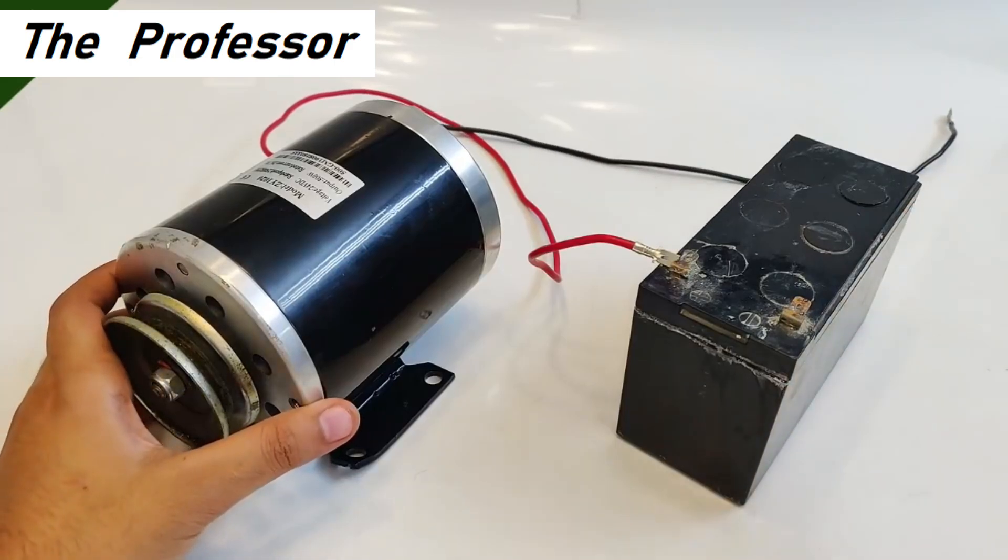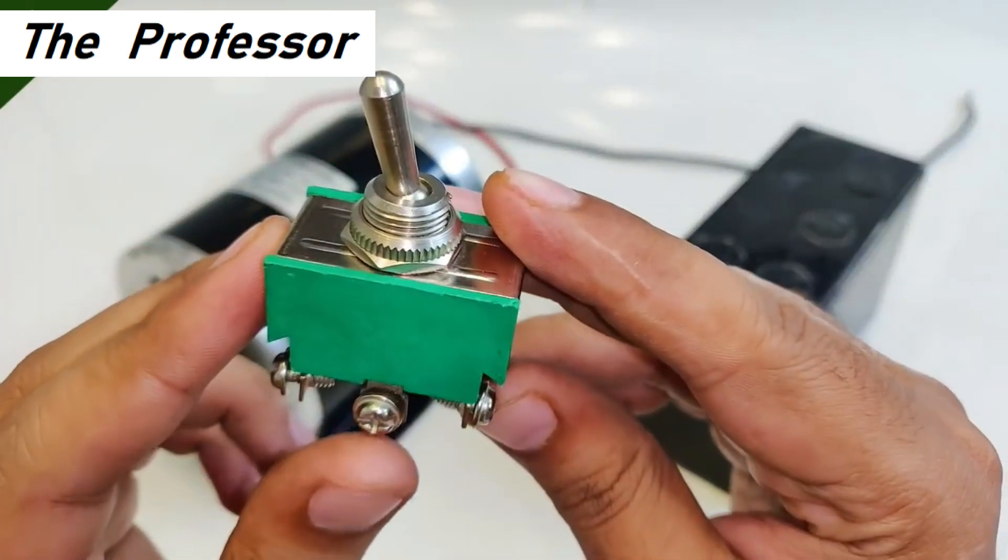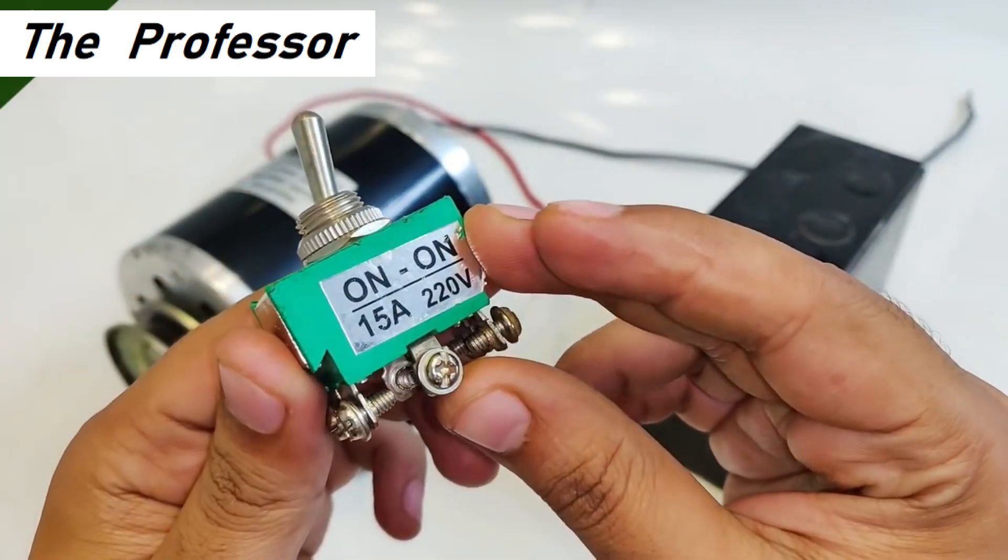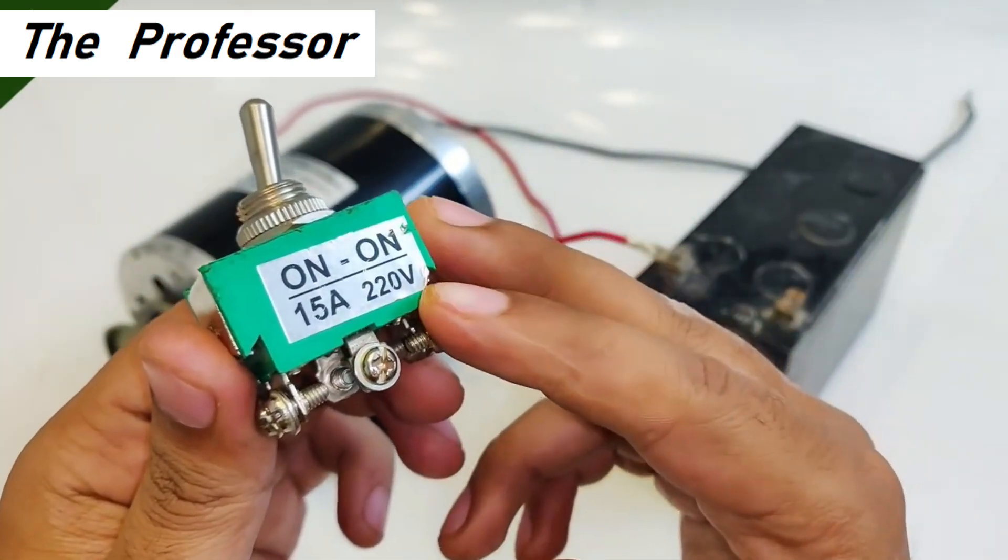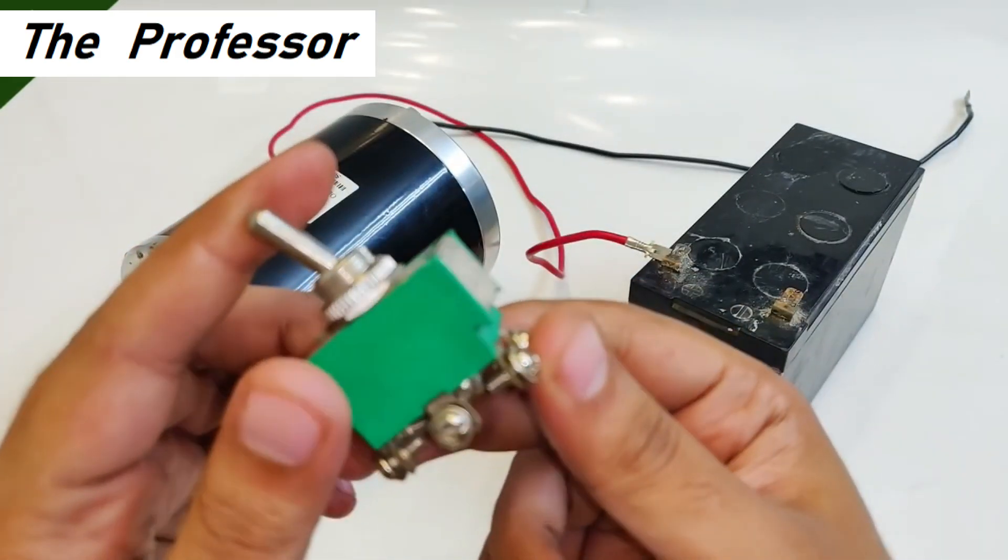So let's bring it to dead stop. For that you will be needing a single push double throw switch. This what you see is rated at 220 volts and up to 15 amperes. This is the max double throw switch I had.